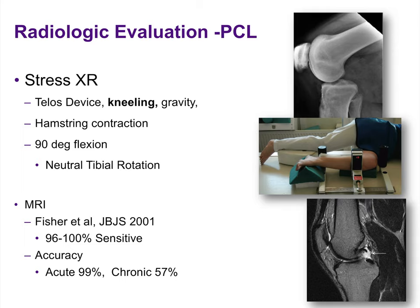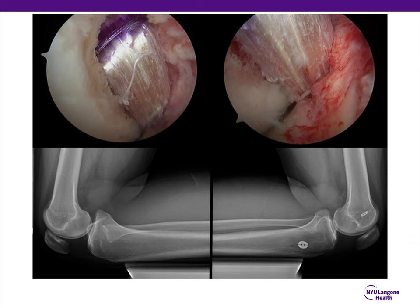In terms of the radiographic workup of PCL injuries, stress tests and stressed x-rays are very important. You can use a Telos device, gravity, or kneeling x-rays, which have shown recent benefits and are probably the most specific and sensitive for PCL injuries — borne out by studies by LaPrade. MRIs are obviously necessary for the workup. This image from one of Dr. Bruce Levy's studies demonstrates how to perform a kneeling x-ray, with the bump located just off the tibial tubercle, and shows excellent PCL stability after reconstruction.